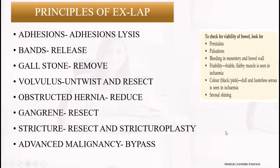Principles of exploratory laparotomy: identify the exact cause. For adhesions, perform adhesiolysis; for bands, do band release; for gallstones, remove them; for volvulus, untwist and resect; for strictures, perform stricturoplasty; for advanced malignancy, perform bypass. While doing the laparotomy, check for bowel viability — look for peristalsis, pulsations, bleeding mesentery, friability (friable bowel), flabby muscle (seen in ischemia), black discoloration (versus pink), dull or ragged serosa (seen in ischemia), and whether the serosa is shining.